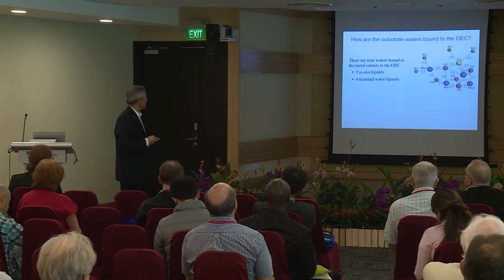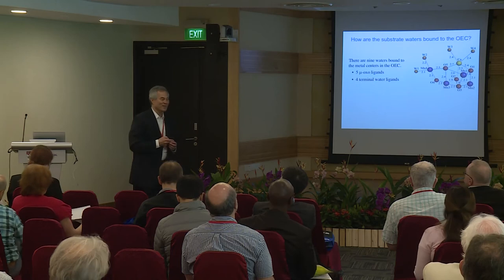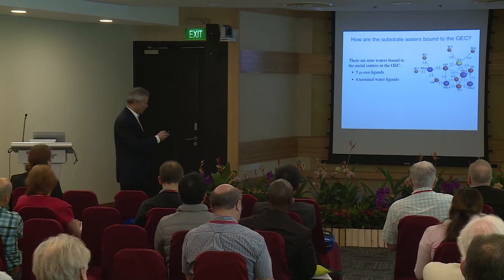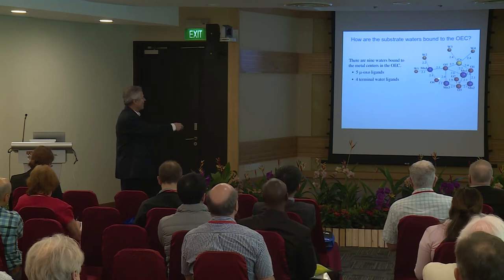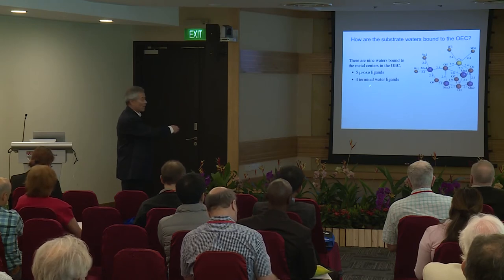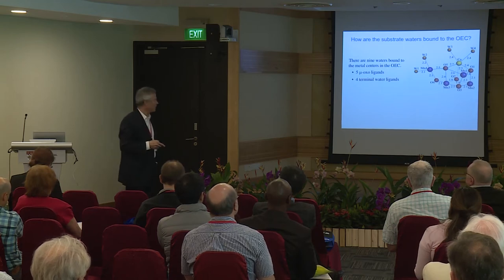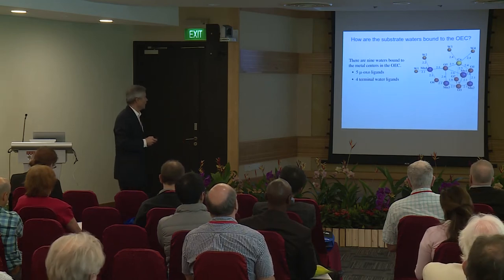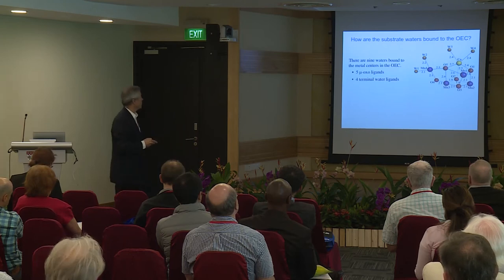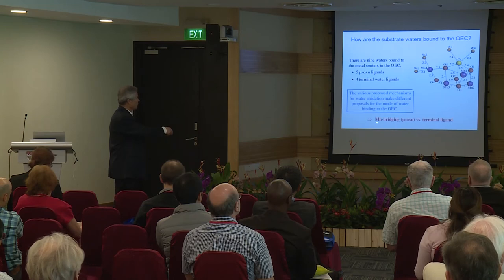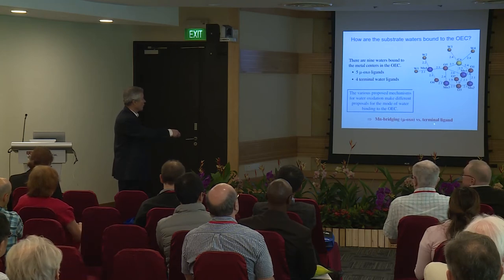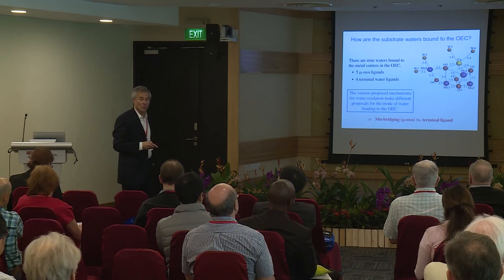Now I want to address the question of how substrates are bound. As many people have said, there are actually nine waters as ligands to the metal centers: five mu-oxo ligands and four terminal water ligands, as well as many more surrounding them in a hydrogen bonding network. All of these are potential candidates for the substrate — not only the direct ligands but also second shell waters. This is very relevant to the mechanisms, where some proposals have mu-oxo bridges as substrate, others have terminal ligands, and some mechanisms even propose second-shell waters as substrates.